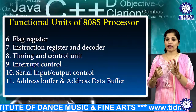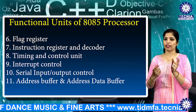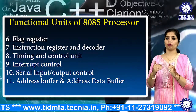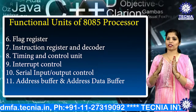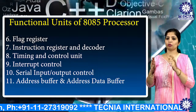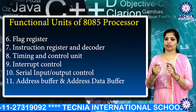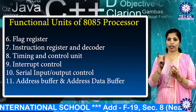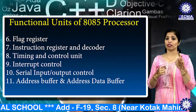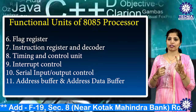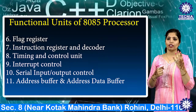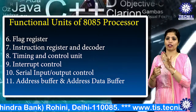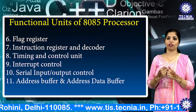The next unit is interrupt control. As the name suggests, it controls the interrupts during processing. When a microprocessor is executing a main program and an interrupt occurs, the microprocessor shifts control from the main program to process the incoming request. After the request is completed, control goes back to the main program. There are 5 interrupt signals in the 8085 processor: INTR, RST 7.5, RST 6.5, RST 5.5, and TRAP.